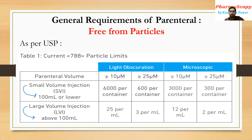Using the microscopic technique for a small volume injection: for particles ≥10 micrometers, the limit is less than 3,000 per container; for ≥25 micrometers, it should be 300 per container. For large volume injection through microscope: the limit is 12 per mL for ≥10 micrometers, and 2 per mL for ≥25 micrometers.